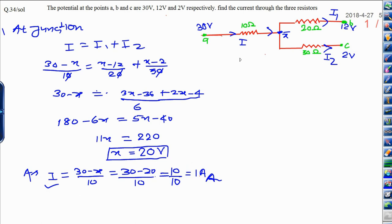It means through the I, there is a current flowing 1 ampere. Similarly, I1 can be written as,